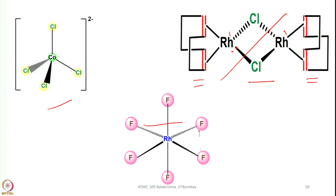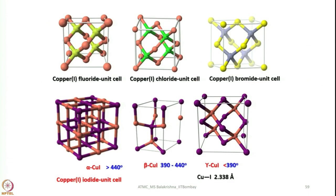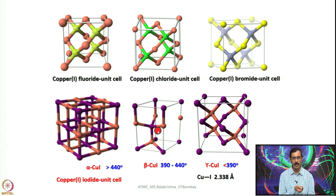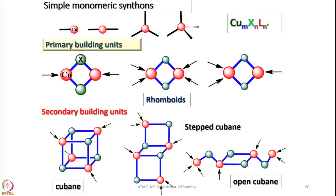With copper and different halides, we encounter different types of arrangements in the unit cell. For copper(I) fluoride (CuF), one type of arrangement is seen; for chloride, a slightly different arrangement; for copper(I) iodide, we have alpha, beta, and gamma phases. The average copper-to-iodide bond distance is about 2.338 Å. Cuprous halides have a remarkable ability to undergo association to give a series of structures not seen with other metal halides.